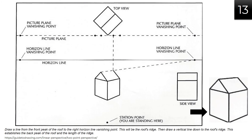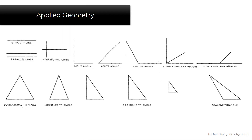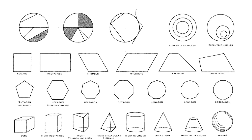Now we move on to applied geometry. We will be learning about straight lines, parallel lines, intersecting lines at right angle, acute angle, obtuse, complementary and supplementary angles, the equilateral triangle, the isosceles, a 3-4-5 right triangle, and the scaling triangle. We also have different shapes and compositions: concentric circles, eccentric circles, square rectangle, rhombus, rhomboid, trapezoid, trapezium. Your pentagon inscribe, hexagon circumscribe, heptagon, octagon, nonagon, decagon, and dodecagon.